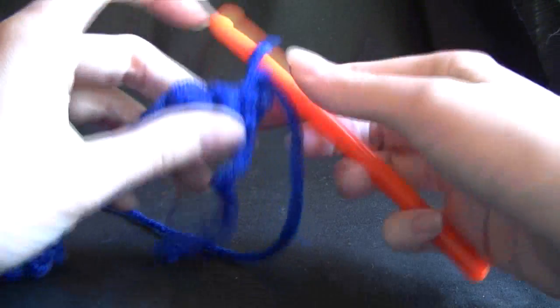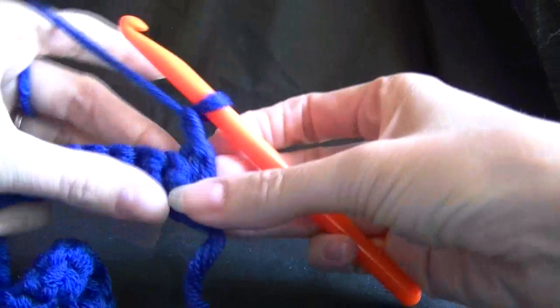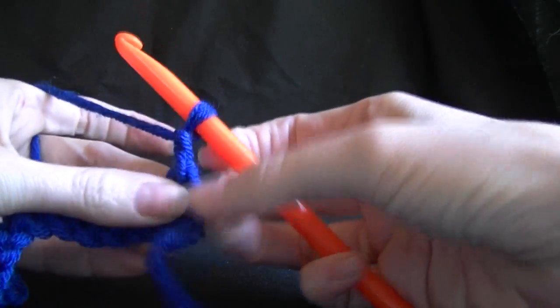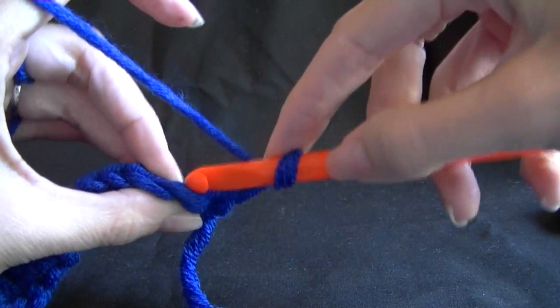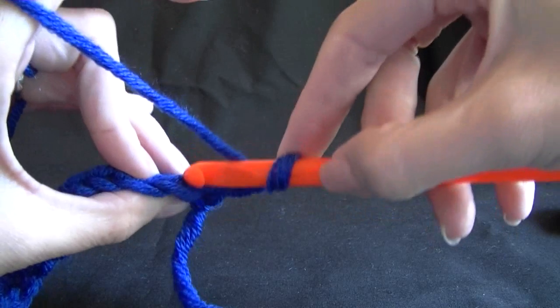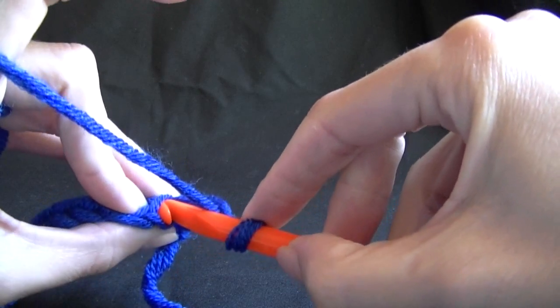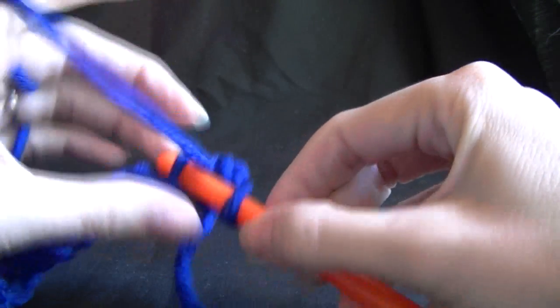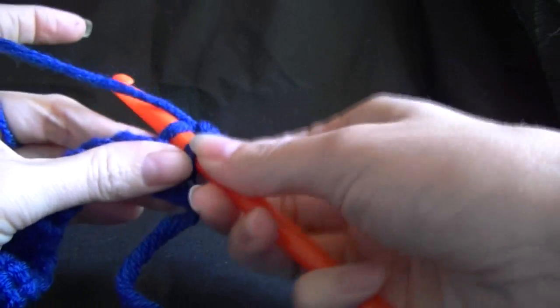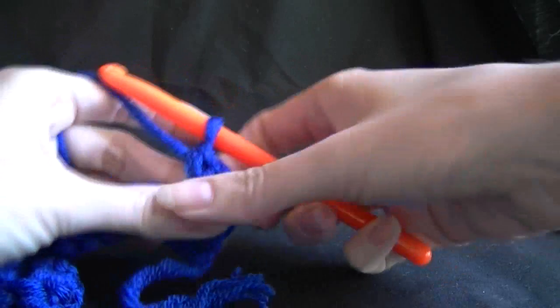So let's just put our work back on. Our chain 1 that we just did then counts as our first stitch, so we're not going into this one. We're going into the second stitch. We're working into the back loop only. So we're just going into the back loop, and then completing our stitch as normal. So pulling up a loop, we've got 2 on our hook, pulling through 2.